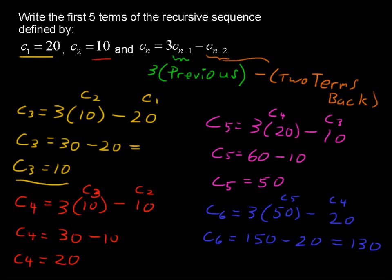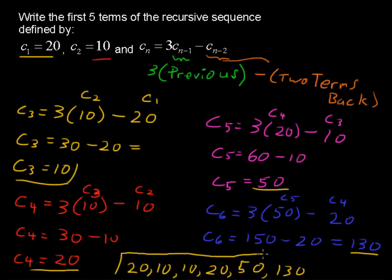So just to answer the question, they say write the first 5 terms. We've got C sub 1 and C sub 2, 20 and then 10. C sub 3 is another 10. C sub 4 is 20. C sub 5 is 50. And C sub 6 jumps way up to 130. There are the first 6 terms, actually, of that recursive sequence.